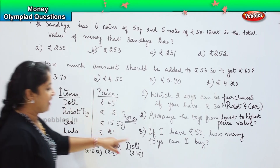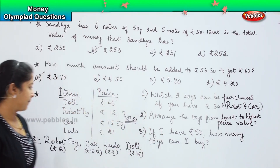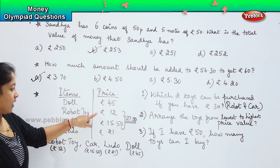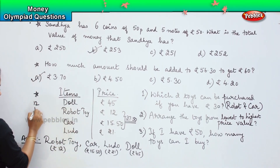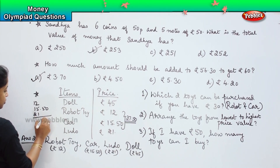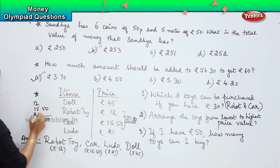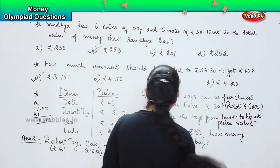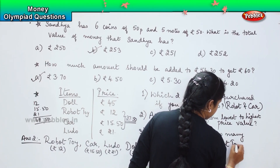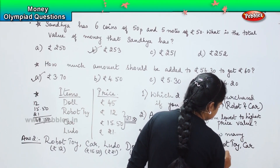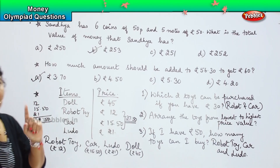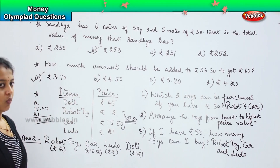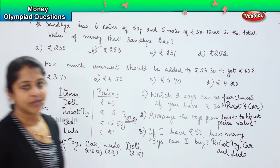The third question: if I have 50 rupees, how many toys can I buy? We can buy robo, car, and Ludo. Adding 12 rupees plus 15.50 plus 21 gives a total of 48.50, which is within 50 rupees. So if I have 50 rupees, I can buy robo toy, car, and Ludo. If I were to buy only the doll, I would get just one toy and no others. By omitting the doll, I can buy all three other toys.